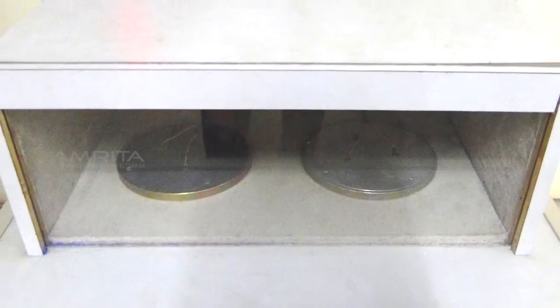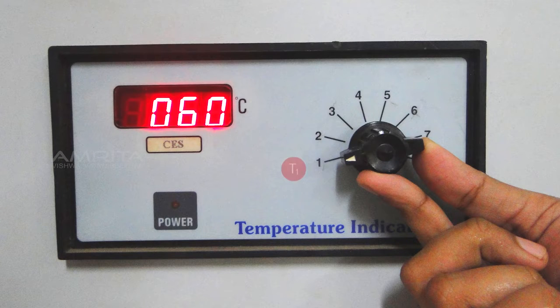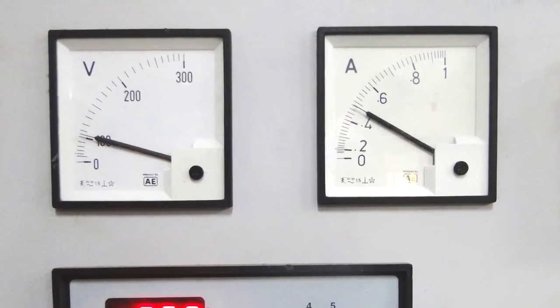After the steady state is reached, the temperatures T1, T3, T4, T5, T6, and T7 of the thermocouples are noted in the temperature indicator. The experiment is repeated for different values of voltage and corresponding current.